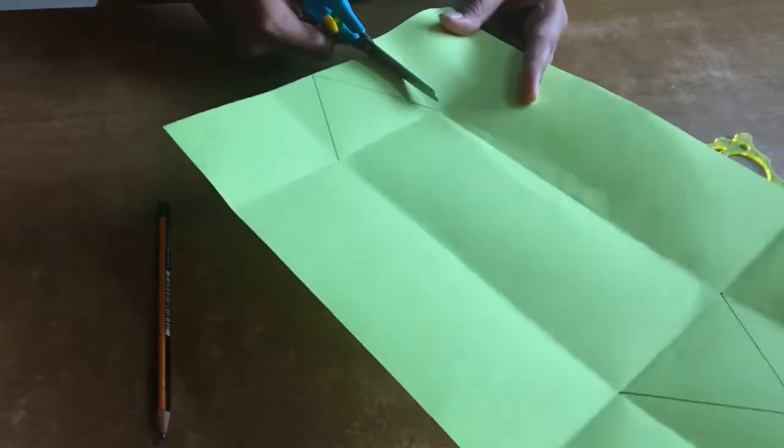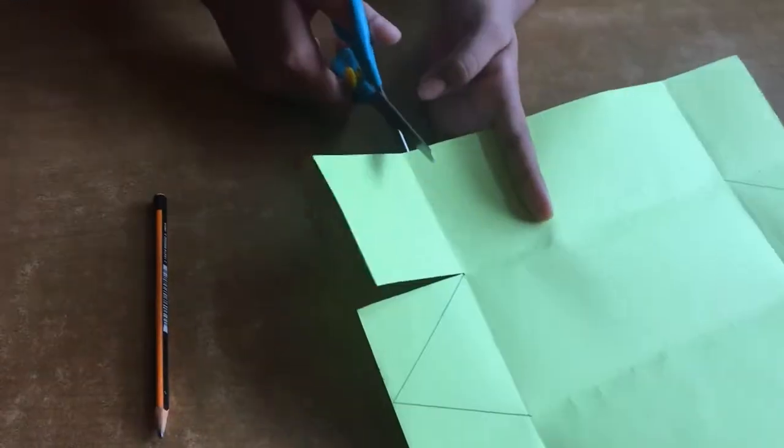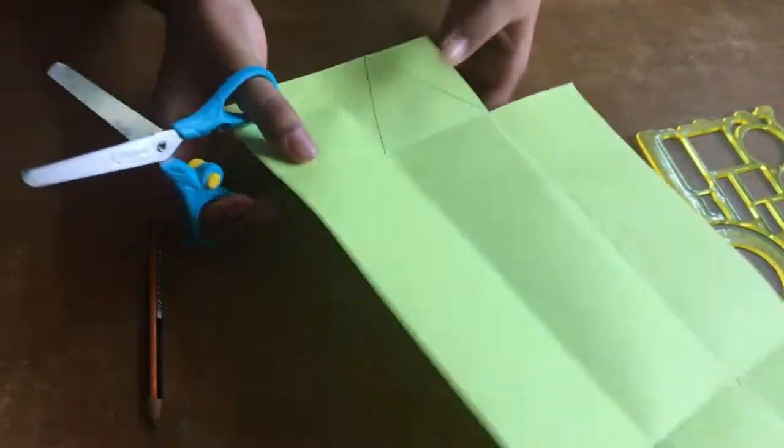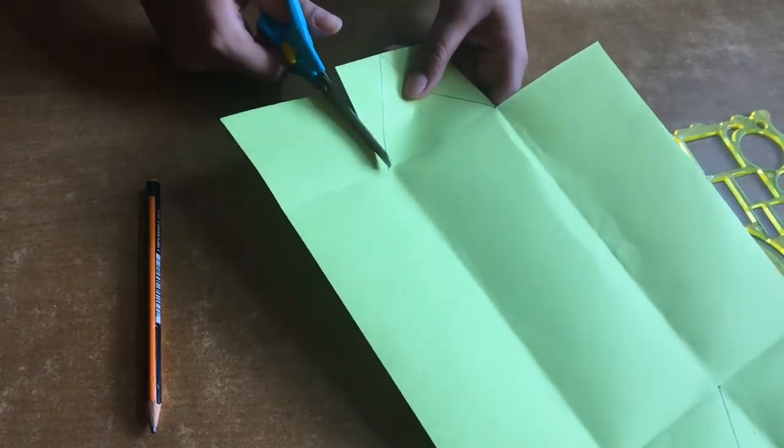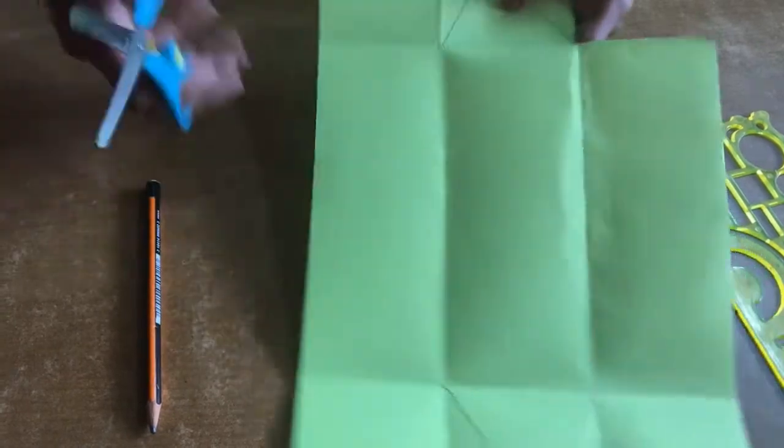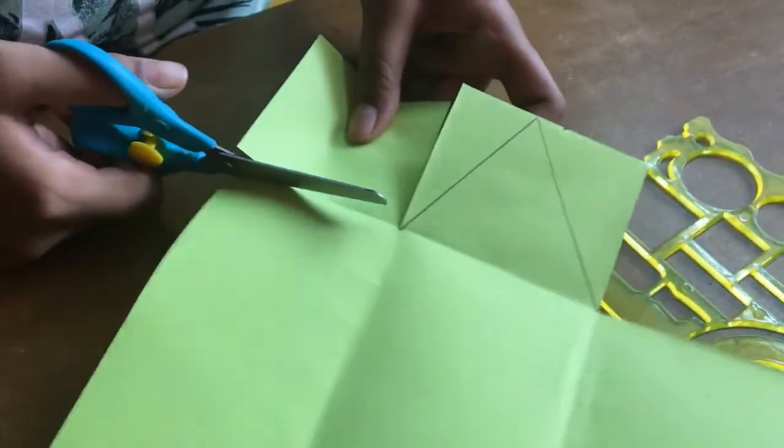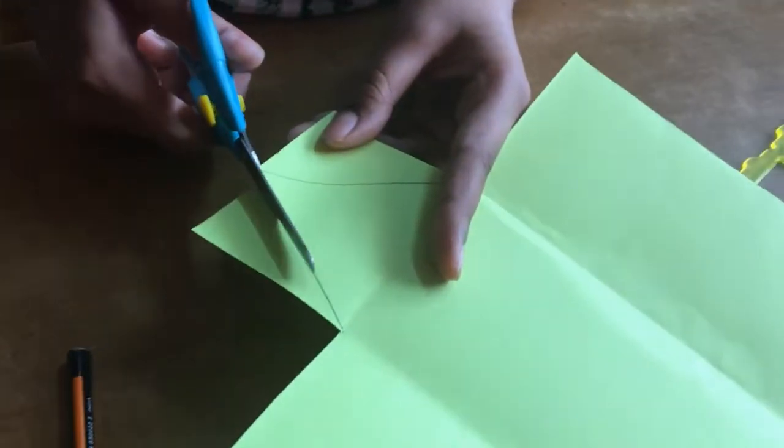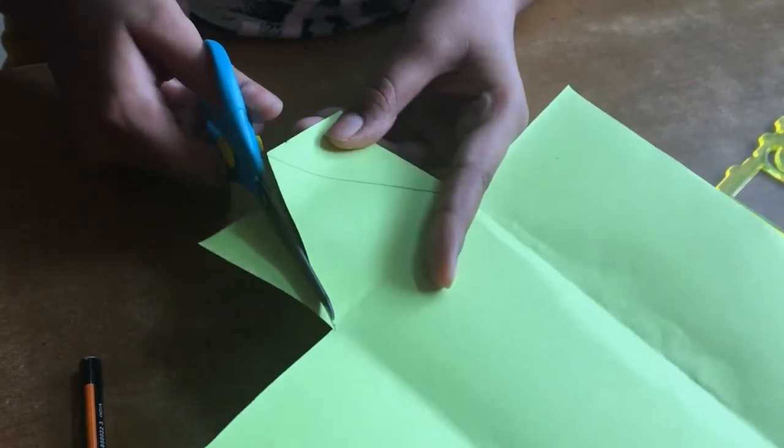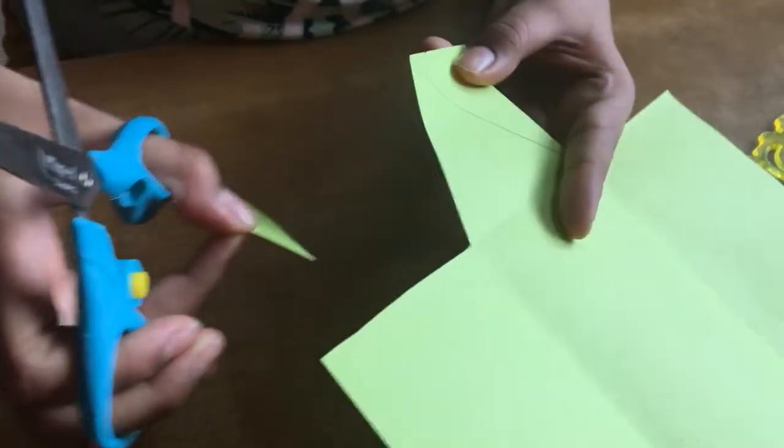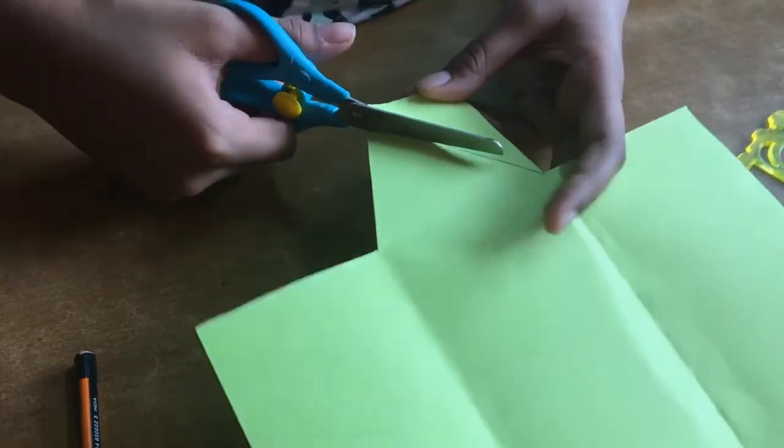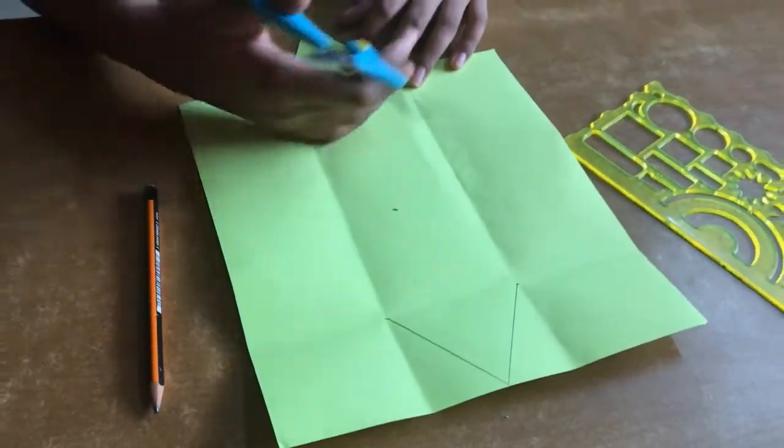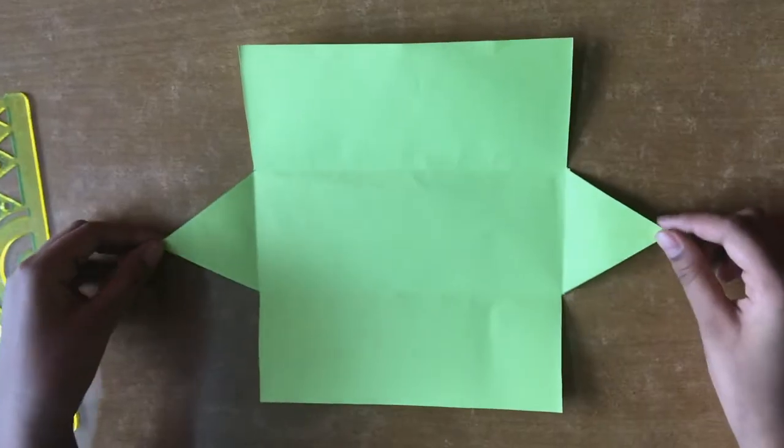Now we should cut like this. Over here also. Then we should cut the triangle. We should do the same thing on this side also. We should cut it like this.